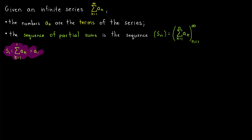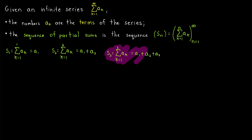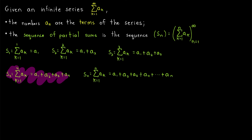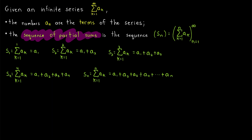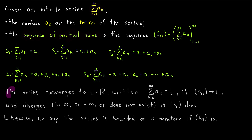Here is S1, the first partial sum — it goes from k equals 1 to k equals 1, so it's just the first term, A1. S2, the second partial sum, goes from k equals 1 to k equals 2: A1 plus A2. S3 goes from k equals 1 to k equals 3: A1 plus A2 plus A3. And in general, the nth partial sum S_n is the sum of the first n terms of the series. The sequence of these partial sums is how we make conclusions about the series.